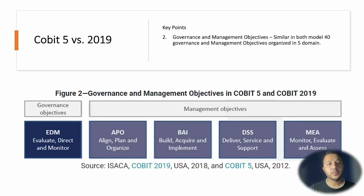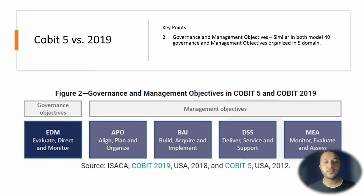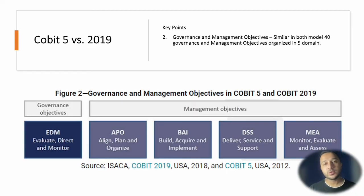Another key element in COBIT 2019 was the increase in governance and management objectives. The COBIT framework defines objectives from the governance aspect that you must assure from IT activities, as well as management-related activities — more process-level objectives to achieve in terms of governance. These have been increased from 37 to 40, and the framework has been organized into five domains, as reflected in the diagram.